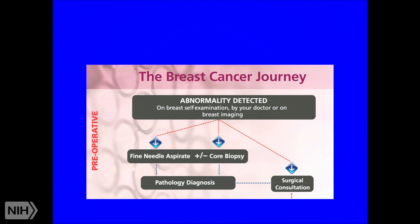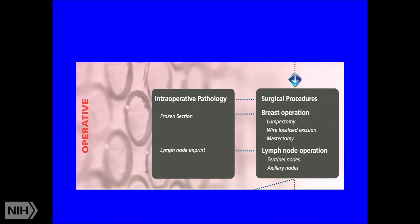When a woman is diagnosed with breast cancer it is a journey with many stops. First, an abnormality is detected — either on self-exam, by the physician, or on breast imaging. The next step is a biopsy: fine needle aspiration or core biopsy using a needle, which can be image-guided if the lesion is not palpable. Initial pathology is obtained, then the patient goes for a surgical consultation.